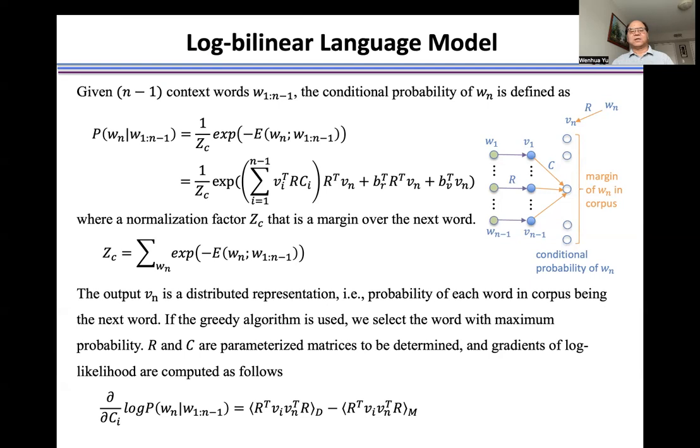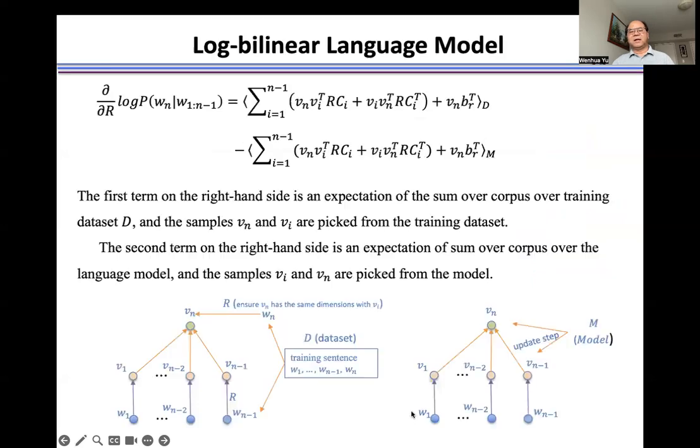To use a gradient descent method to train the model, we calculate the gradient of loss function with respect to R and C. Here is the gradient of loss function with respect to C. The gradient of loss function with respect to R is equal to the difference of two terms. The first one is the expectation of this value over the training dataset D, and the second one is the expectation over the language model M.